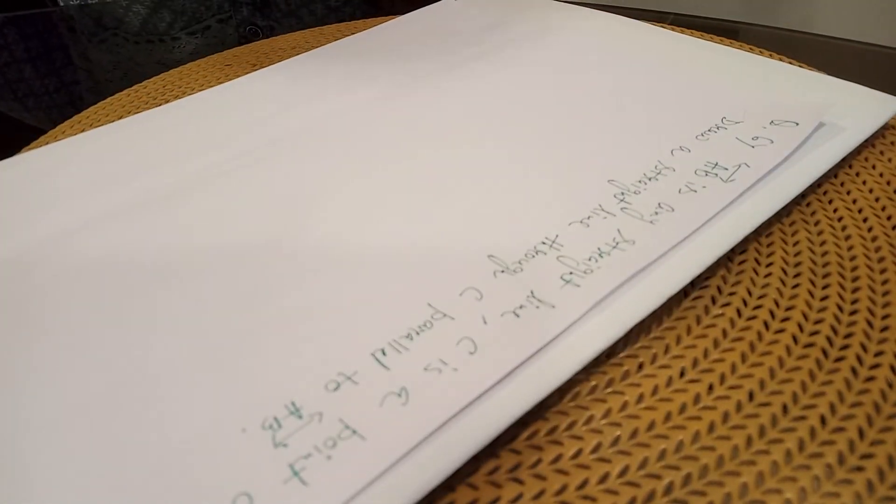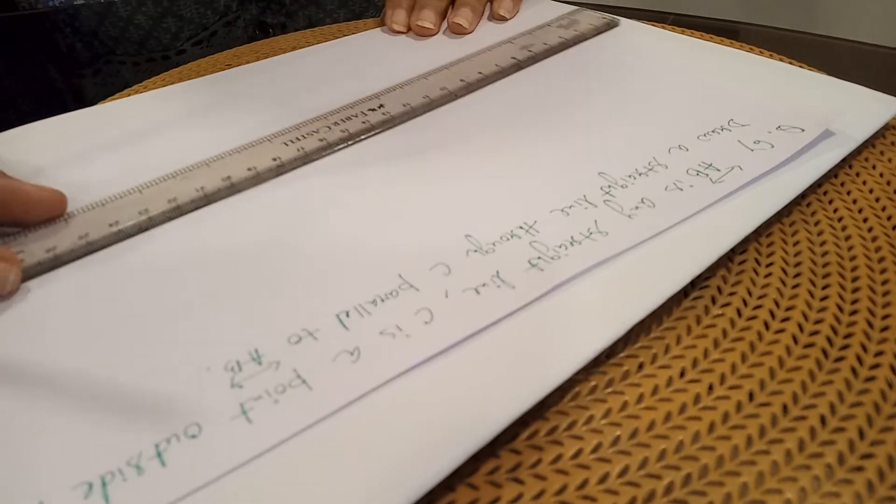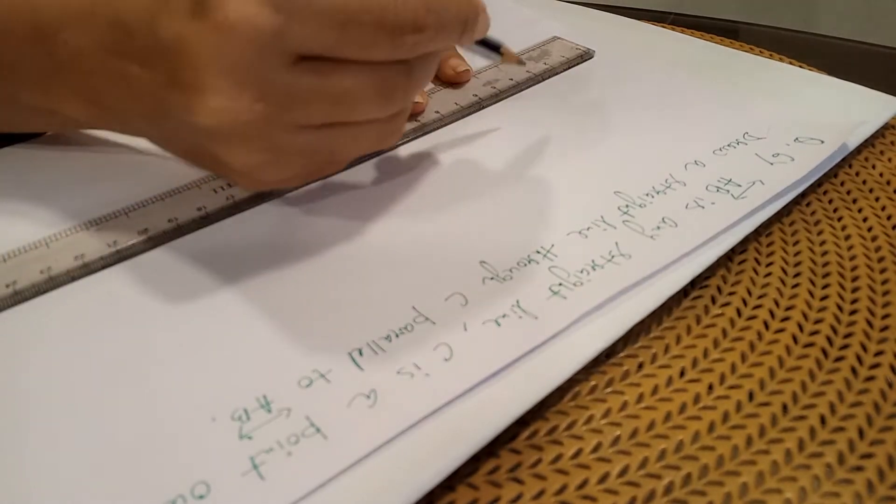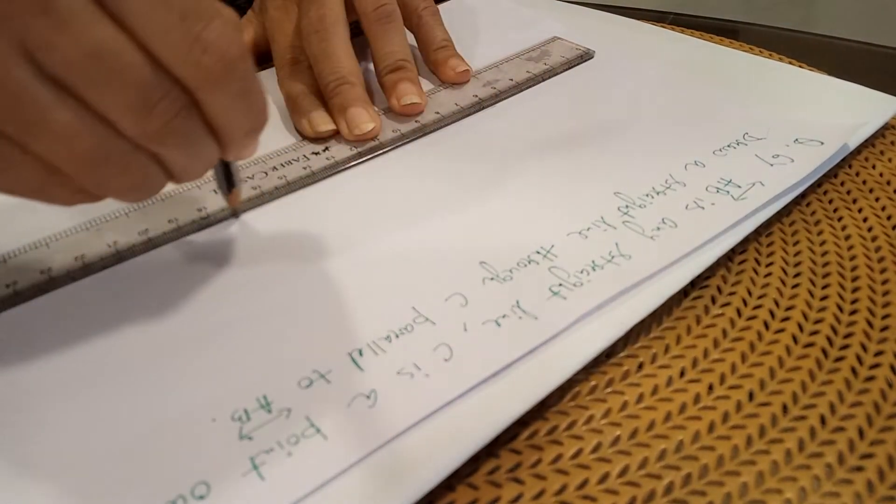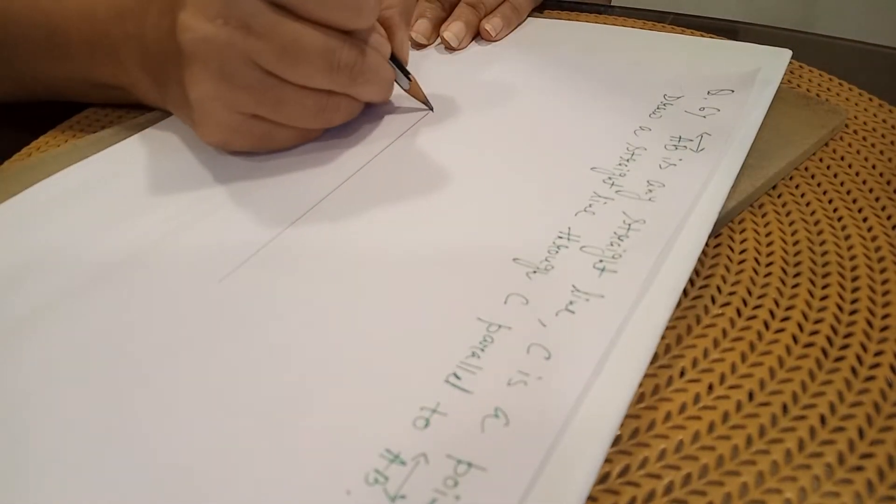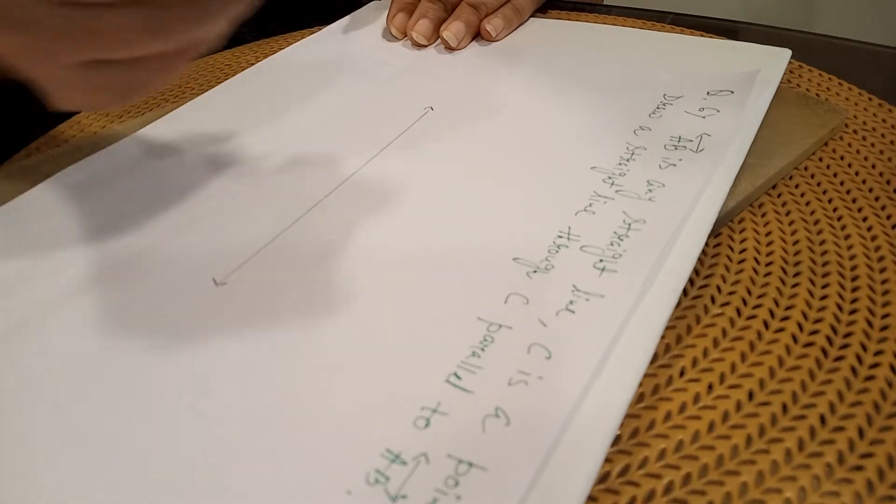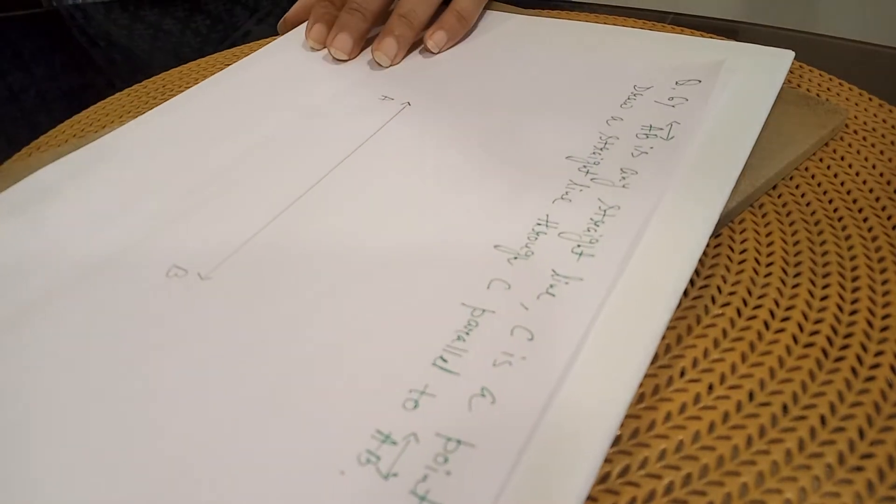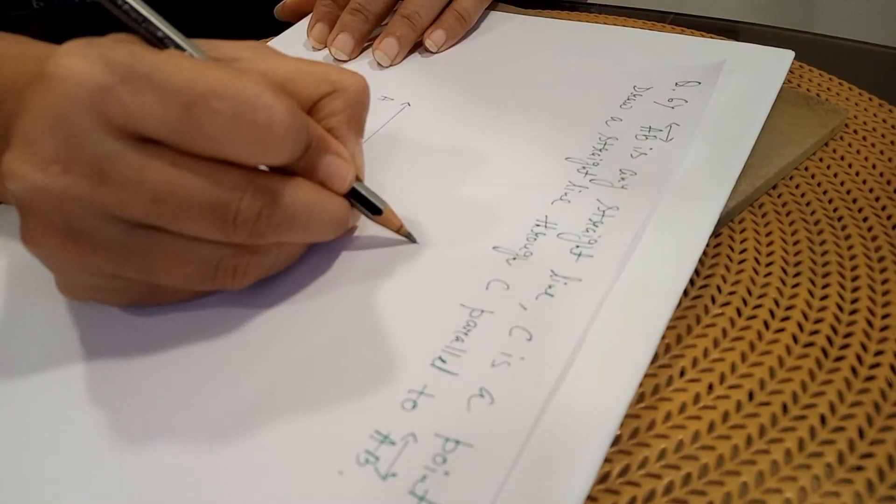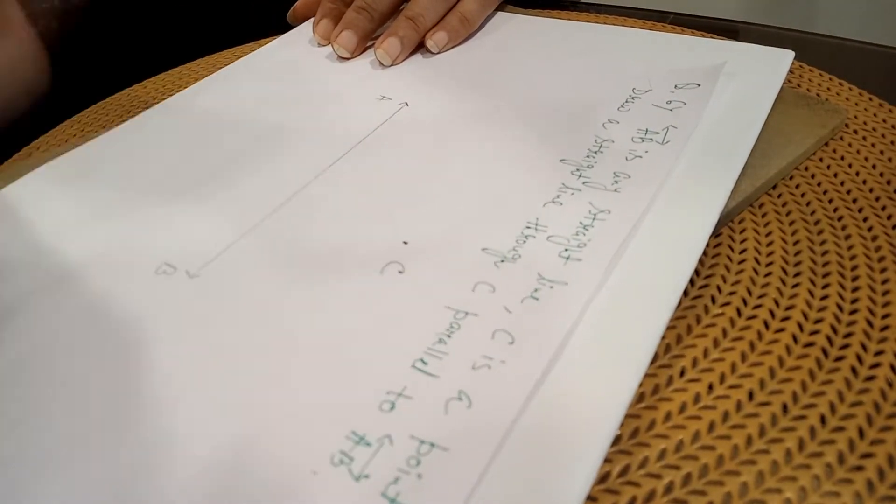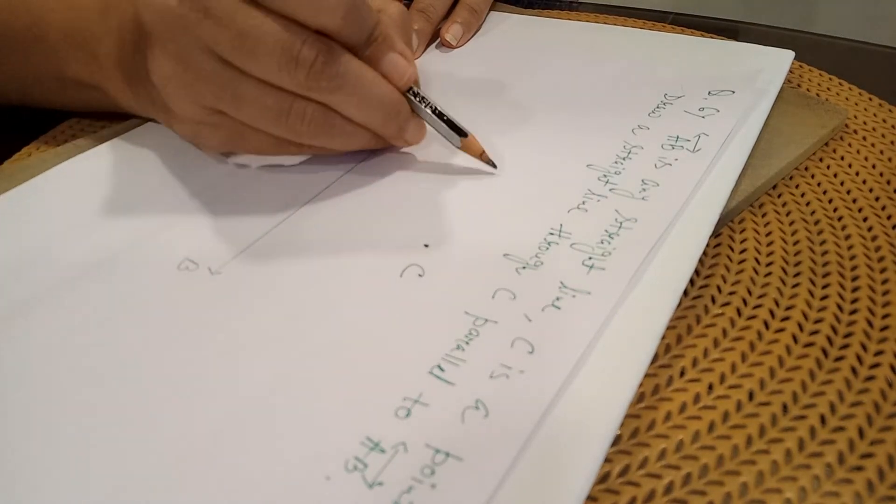So, what to do? Here, length of AB not mentioned, so you can draw any line AB. Here both sides you will give arrows. A, B. C is an external point. You can take C anywhere - it is not on AB, outside of AB. Name it C. I can take C here, here, here, anywhere.